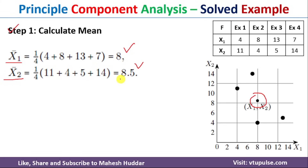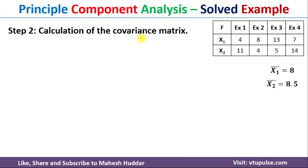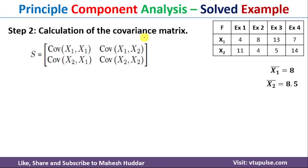Once you calculate the mean, we need to calculate the covariance matrix. The covariance matrix S looks something like this: S is equivalent to covariance of x1,x1; covariance of x1,x2; covariance of x2,x1; and covariance of x2,x2.